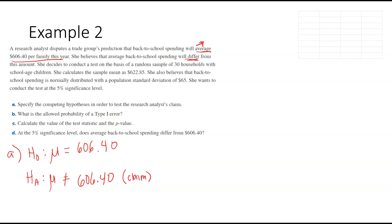Now for part B — what is the allowed probability of a type 1 error? That's our significance level. We're talking about a significance level of 5%, or 0.05. Now part C wants us to calculate the test statistic and the p-value.